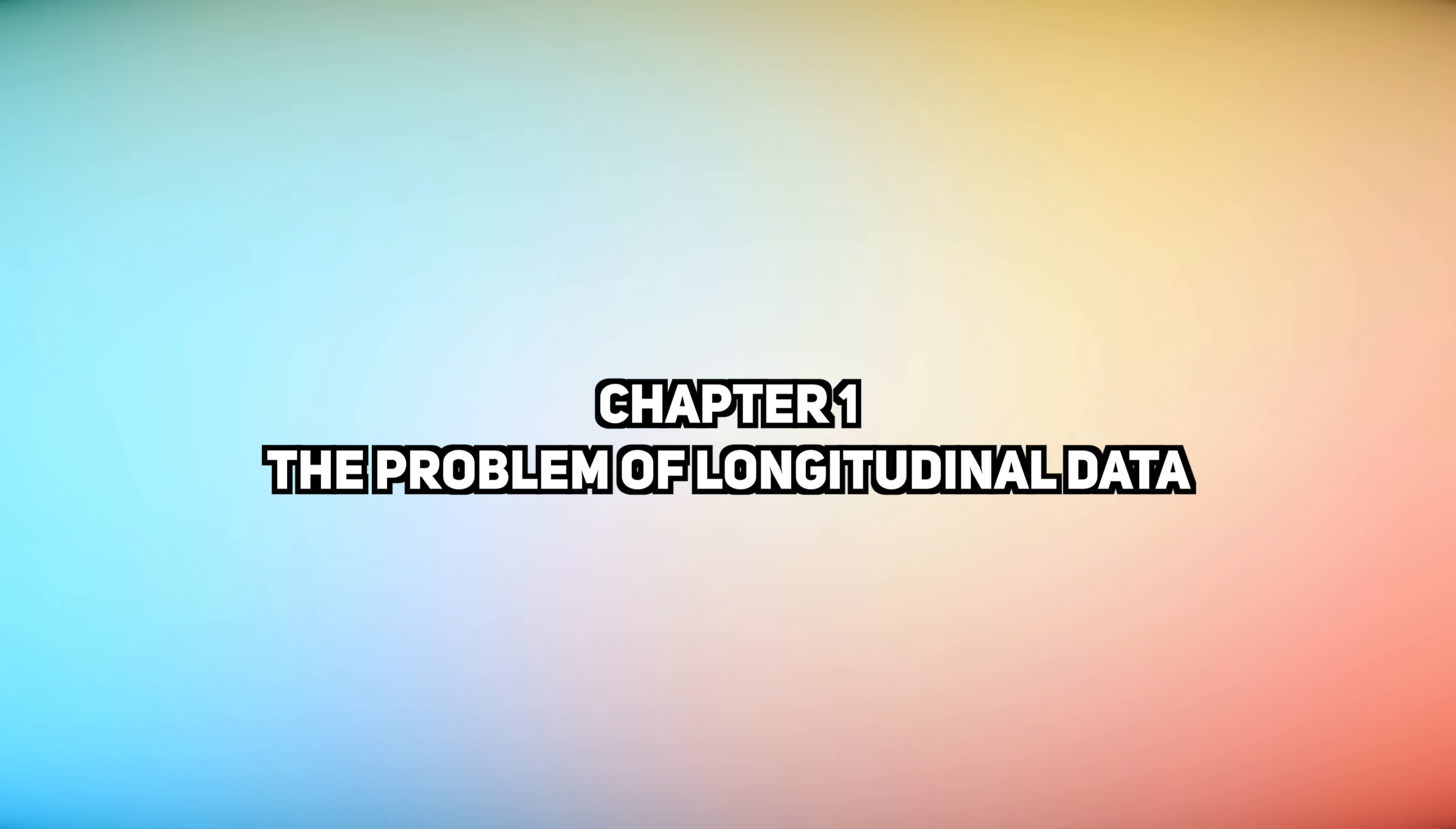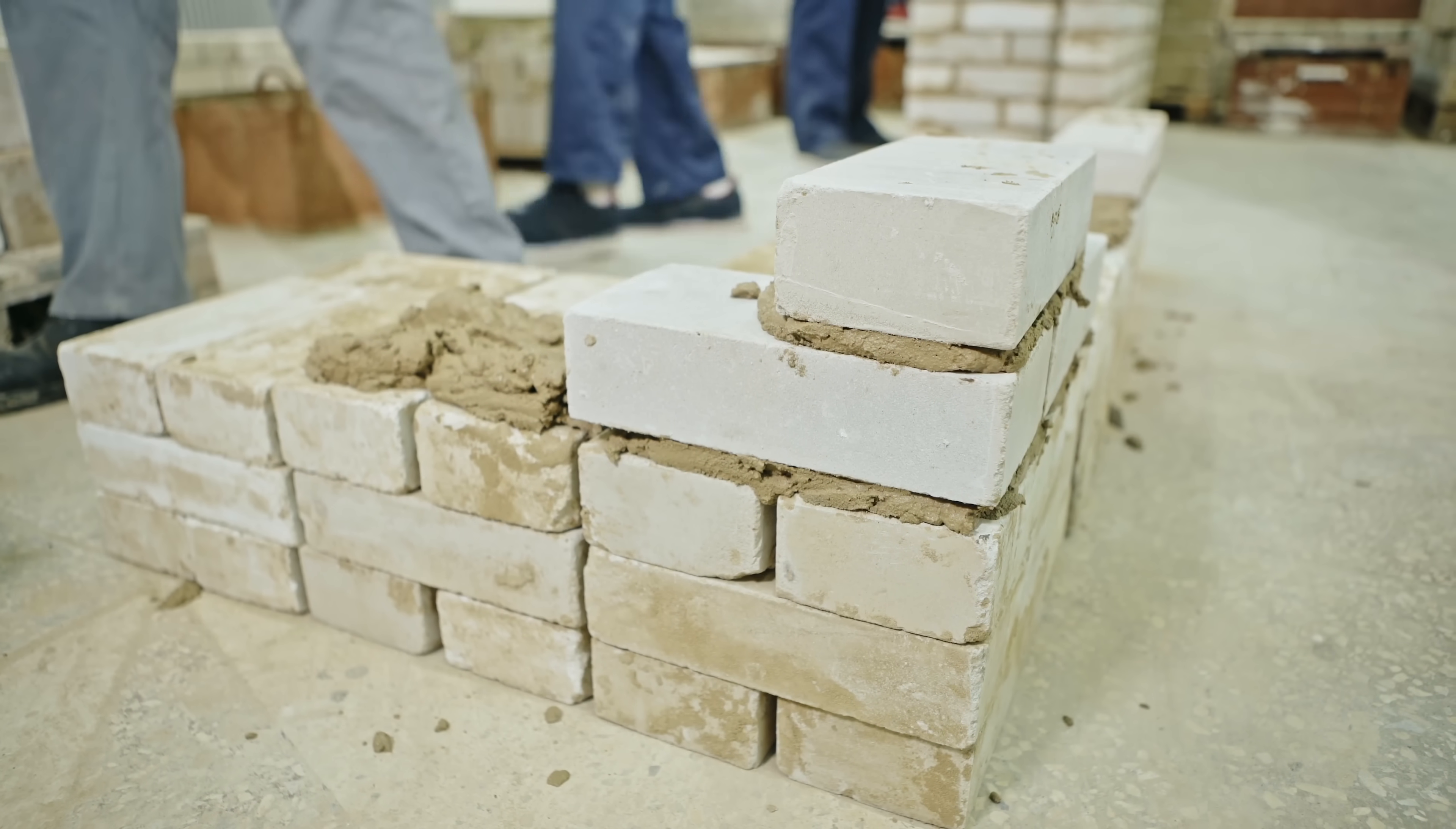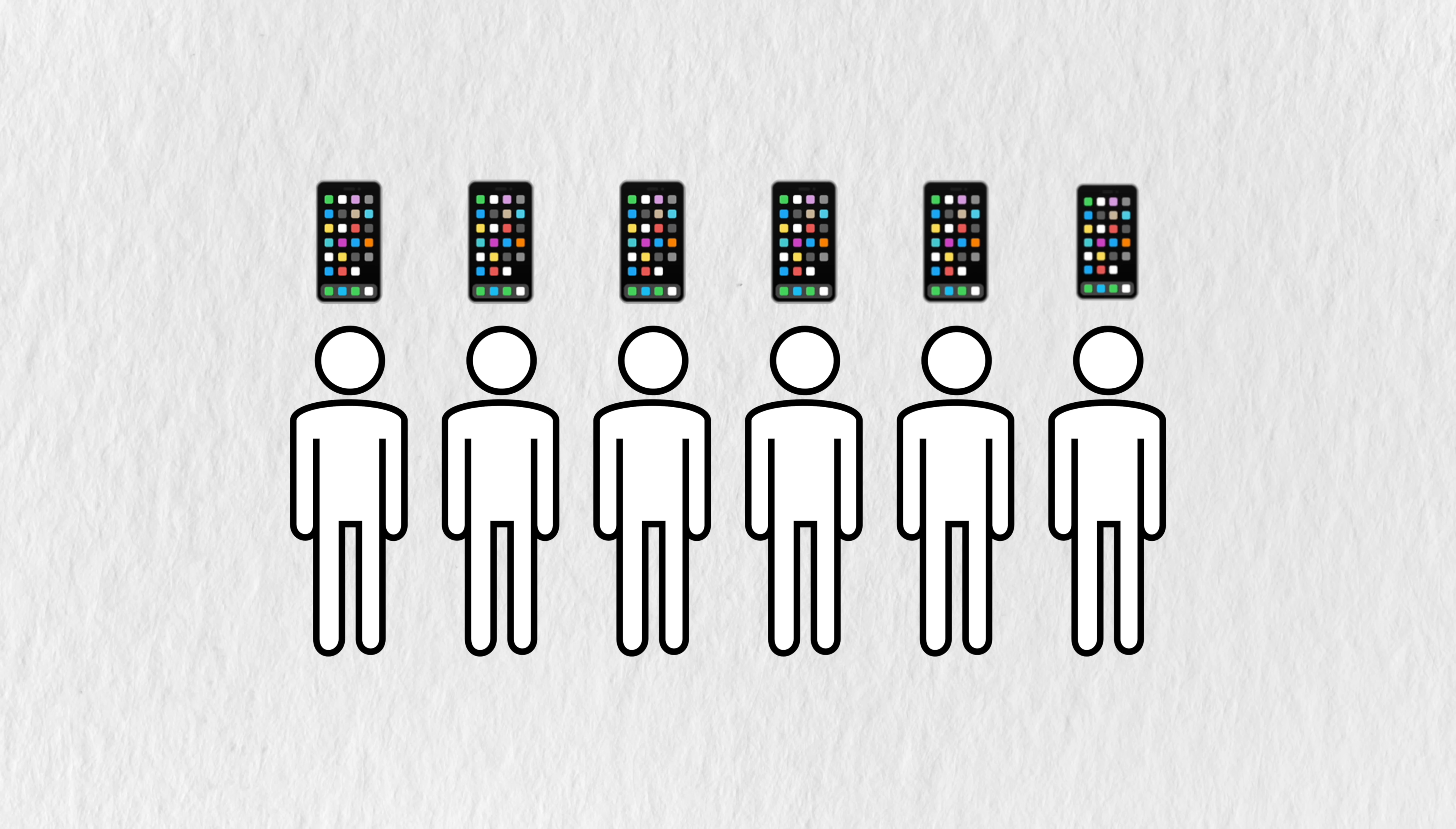I keep saying problem of longitudinal data, so what exactly is the problem? To understand this, you need to understand one of the core assumptions that enable many statistical models to work. The independent and identically distributed assumption, or IID assumption. As an example, let's look at a dataset consisting of six people picked at random. From each person, we'll measure how much time they've spent on their phone in a single day. Their phone screen time.